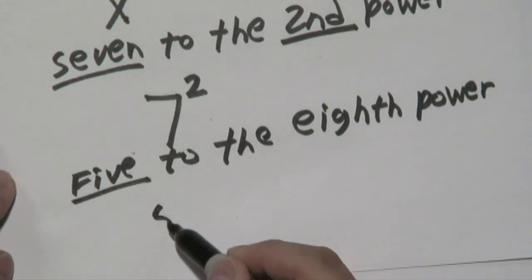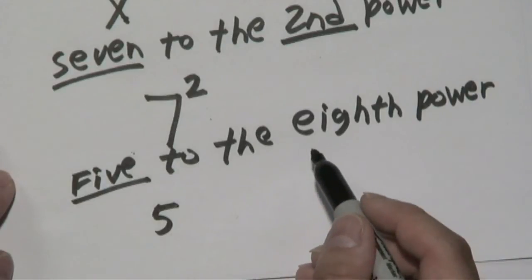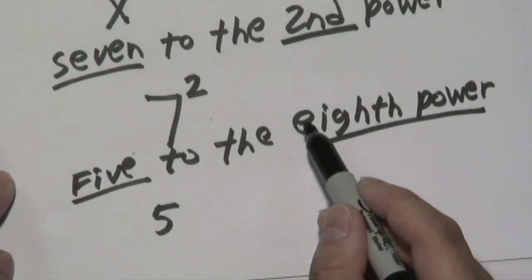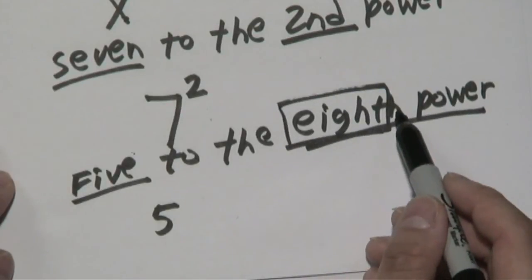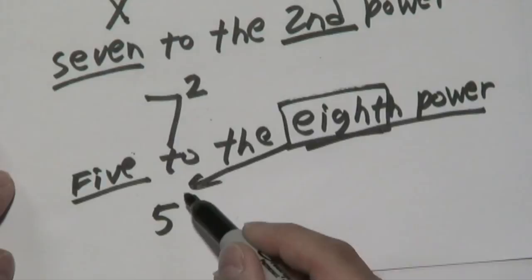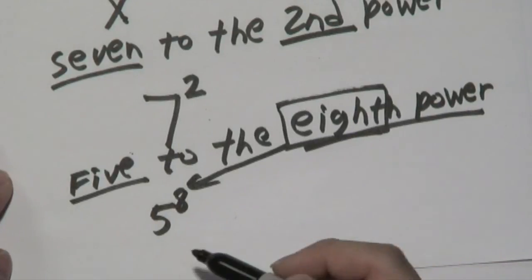The number that's mentioned here, 5, that's going to be your base. To the, that's going to tell you what the exponent is going to be. 8th power, that means the number 8 is here, that's going to be in the exponent position, and that's all you have to do.